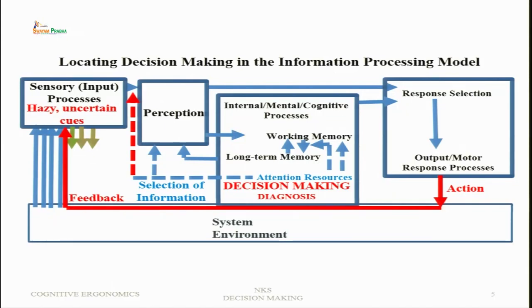To recapitulate the information processing model and locate where exactly decision making processes are located within it: in the first place there is a sensory input. The assumption is there are alternatives available in the external environment — the environment presents certain stimuli, events, actions by other people, or information on a display. This type of information is available in the external environment, so when the decision process starts there is a sensory input.